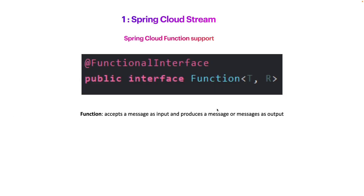Today's video we are going to focus only on Function. When we talk about Function, it is a pure Java functional interface which receives a type and returns another type. In Spring Cloud Stream we use the same concept, so the Function accepts a message as input and produces one or more messages as output.